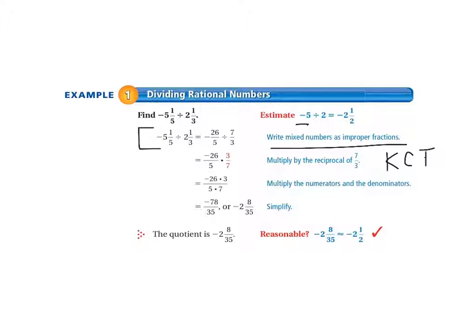And we come up with negative 26/5 divided by 7/3. Then we remember our rule of keep, change, flip. And we have negative 26/5 times 3/7. So that means we're multiplying by the reciprocal of 7/3. We multiply the numerators and the denominators, which gives us negative 78/35. We simplify that and it comes out to negative 2 and 8/35. So we had a negative divided by a positive, and that gave us a negative. We look to see if it's close to our estimate, and it is.